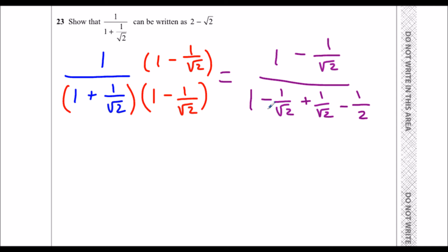This middle bit here is going to cancel out, so there will be no surds left on the bottom. That leaves me with 1 minus 1 over root 2 over 1 minus 1 half, which is 1 half.